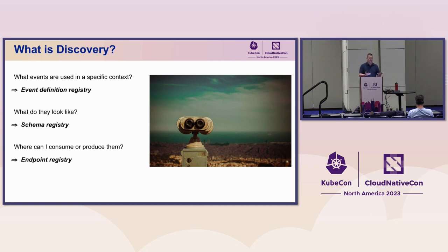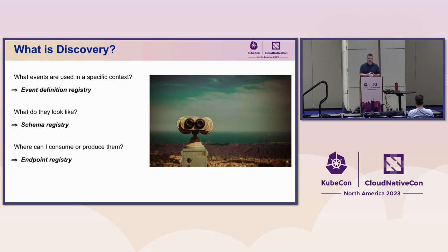The next step is to talk about discovery. We break discovery down into three different areas: the event registry, the schema, and the endpoint. The first part addresses what context the events are used in — are they used as part of a product or perhaps a service? What events are discoverable to consume from an end user perspective, either with automation and tooling? From a schema perspective, we want to understand what's included in the payload — what the payload looks like. This can be used for code generation, validation purposes, and to discover behavioral changes with events. Finally, there will be details on what endpoints are available to consume and produce events.